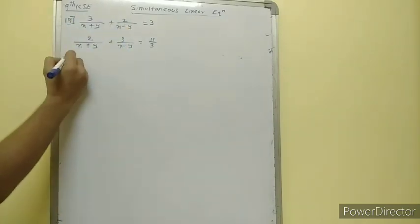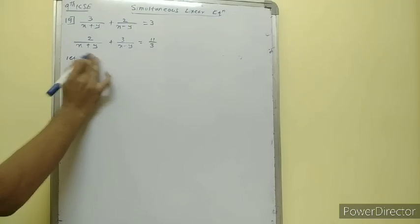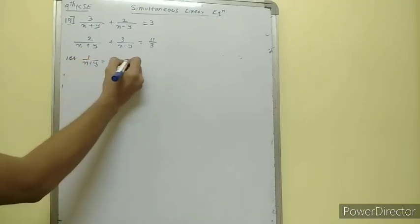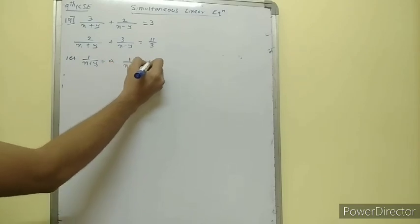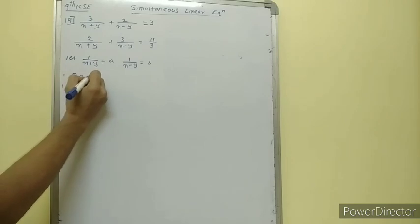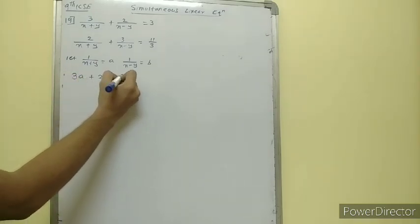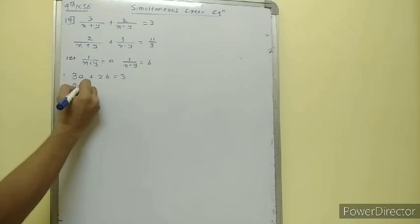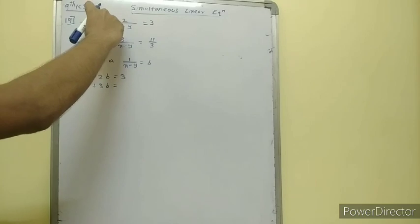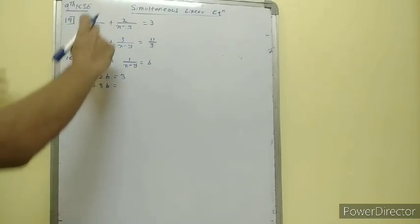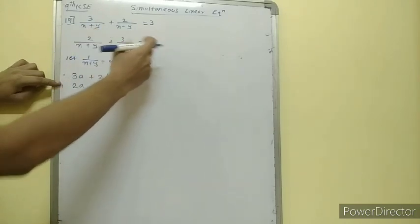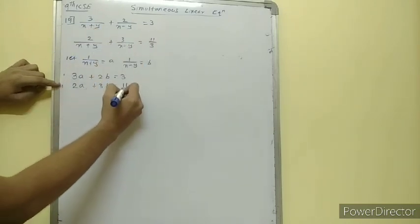So we will assume that: let 1 upon x plus y is equal to a, and 1 upon x minus y is equal to b. So we have 3a plus 2b is equal to 3, and 2a plus 3b is equal to 11 upon 3.